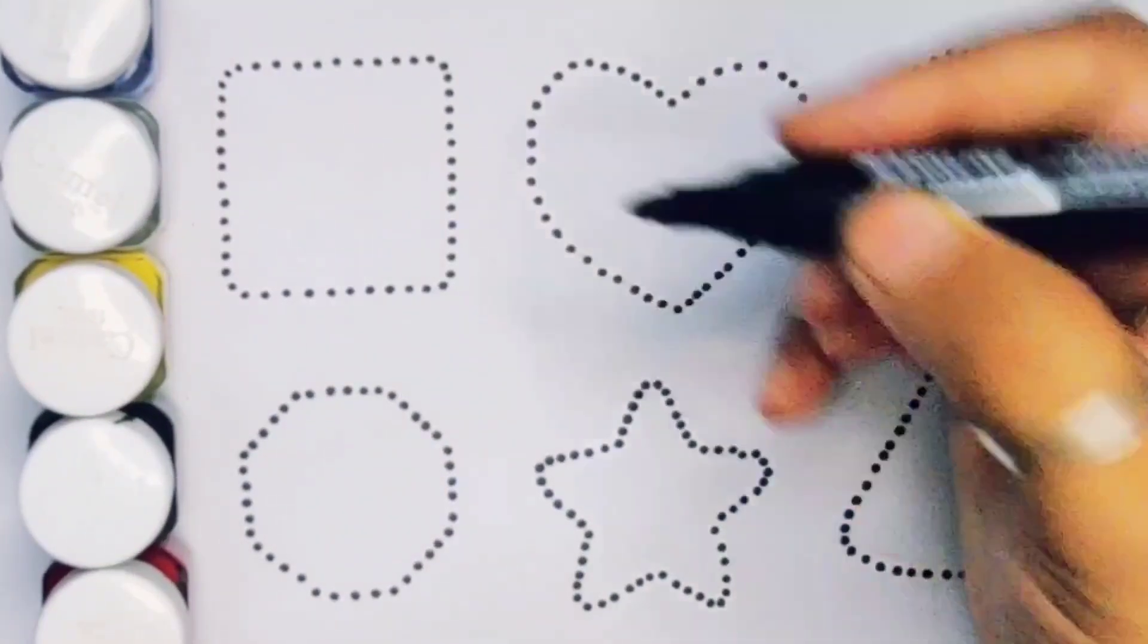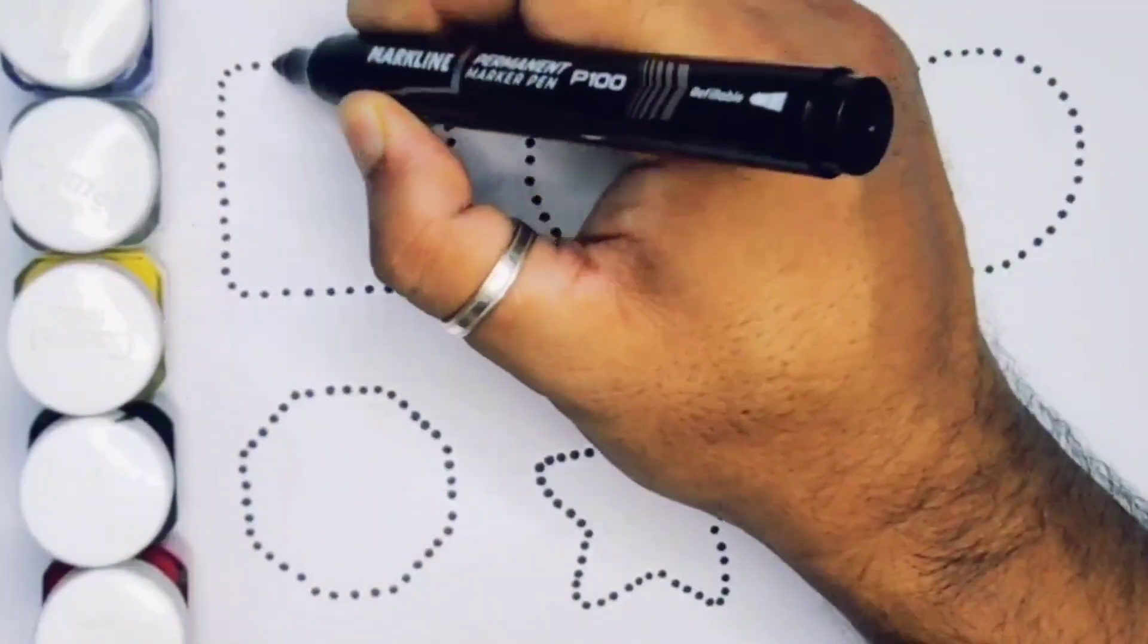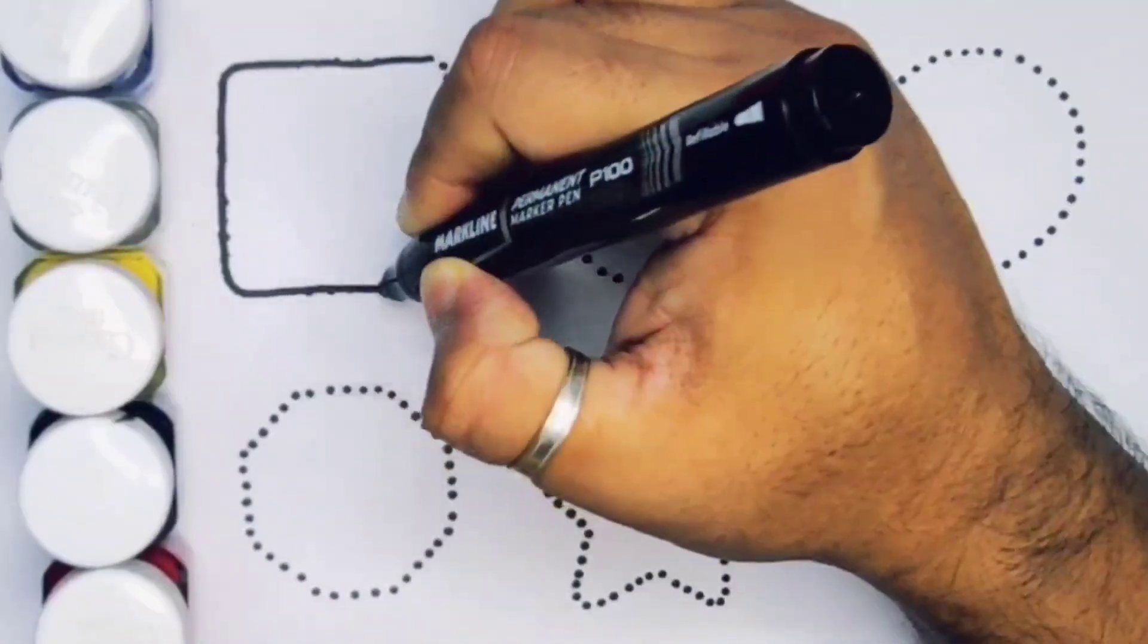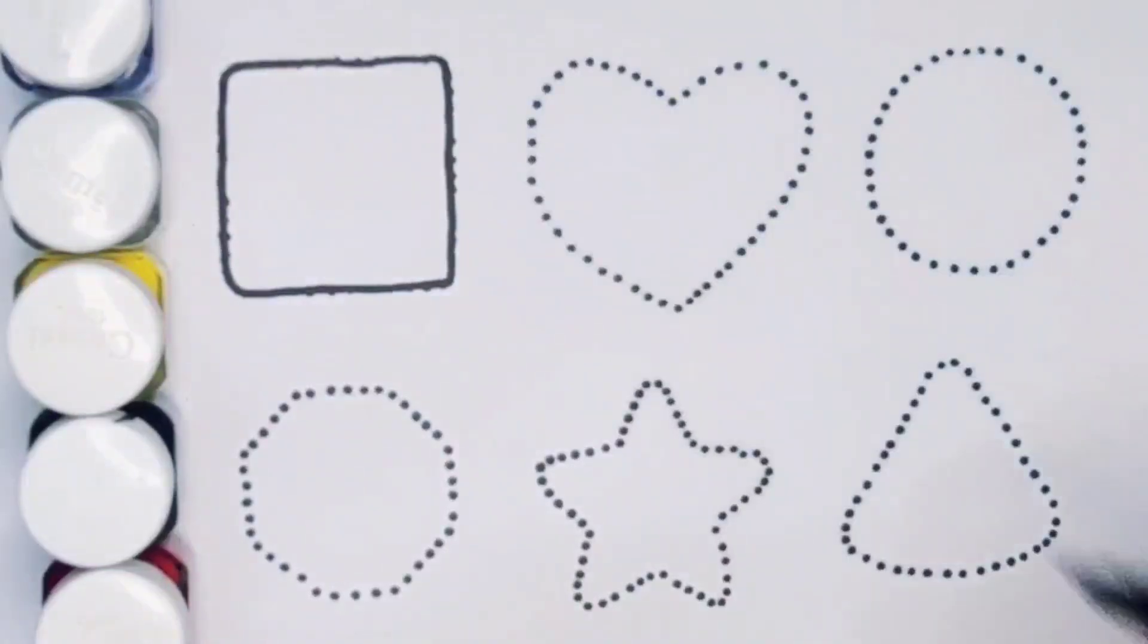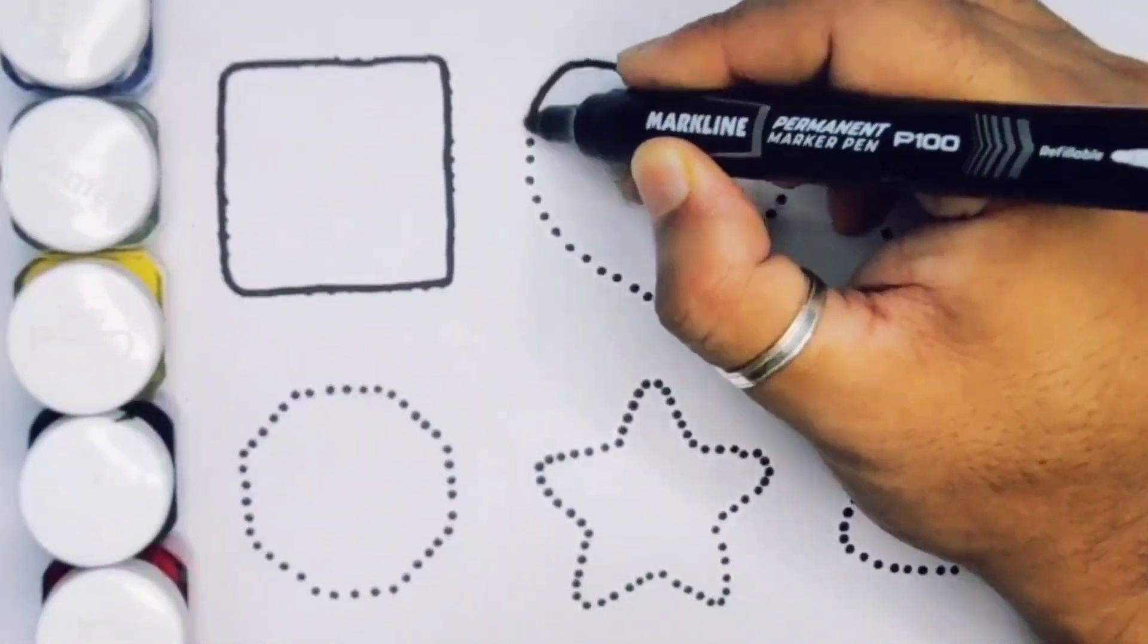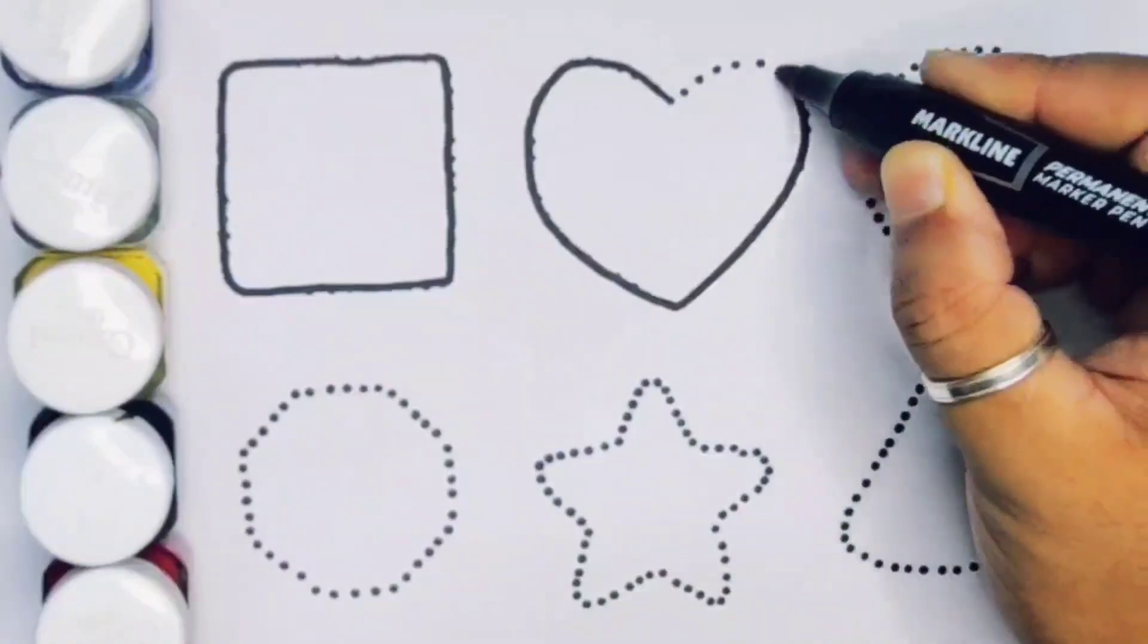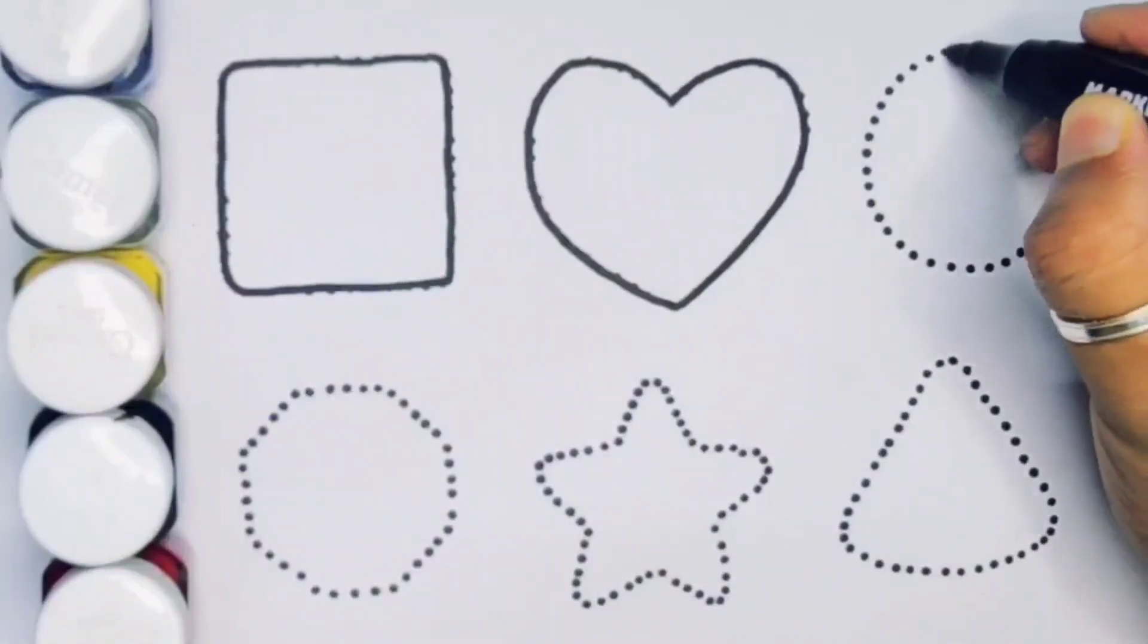First we are going to draw the shapes. Square, next heart, next kids, circle.